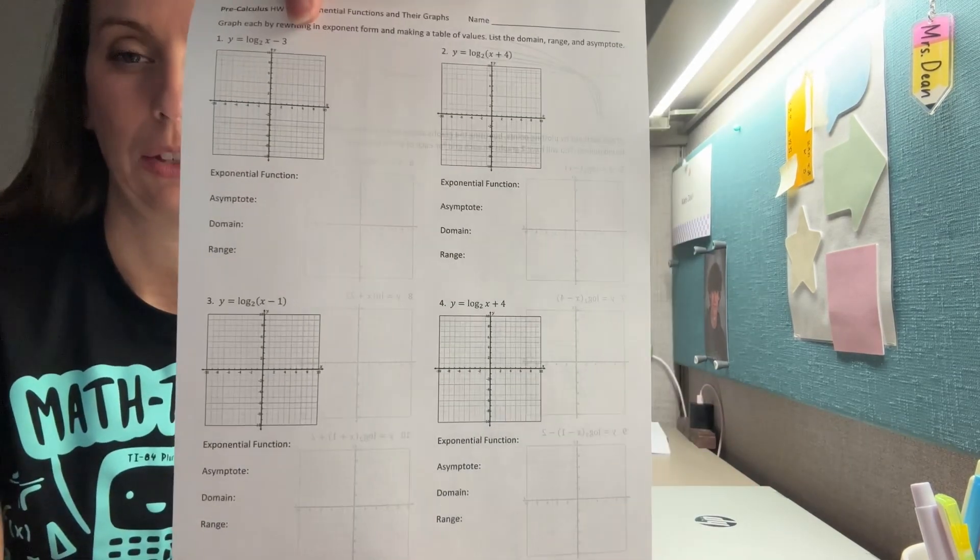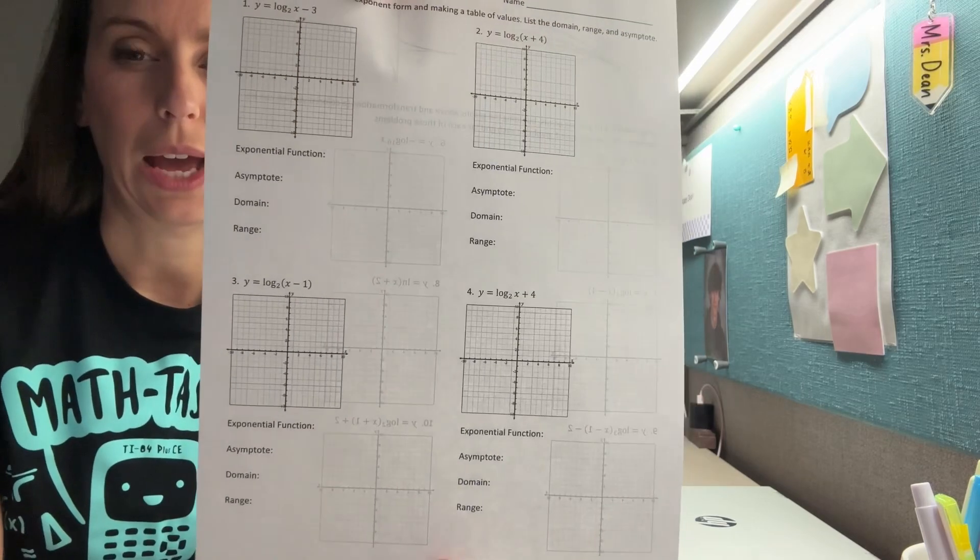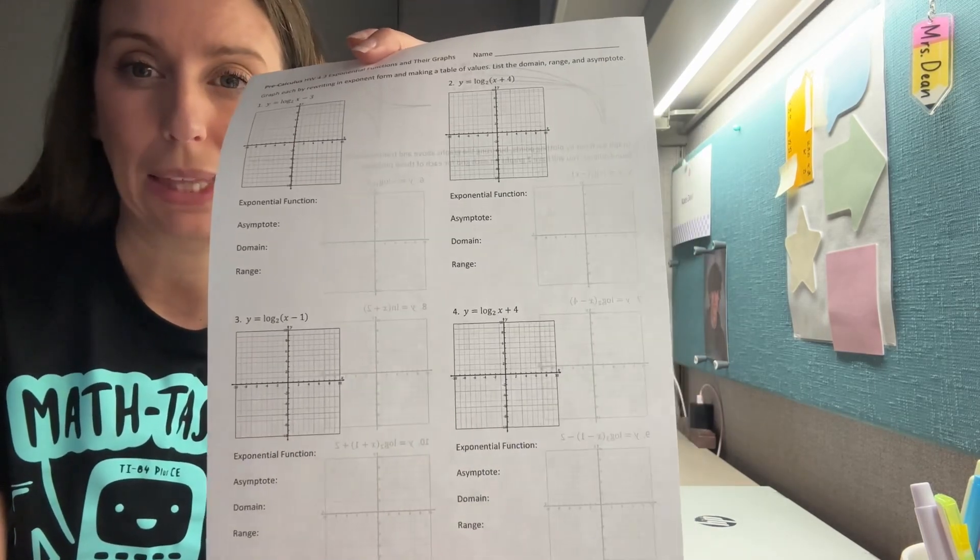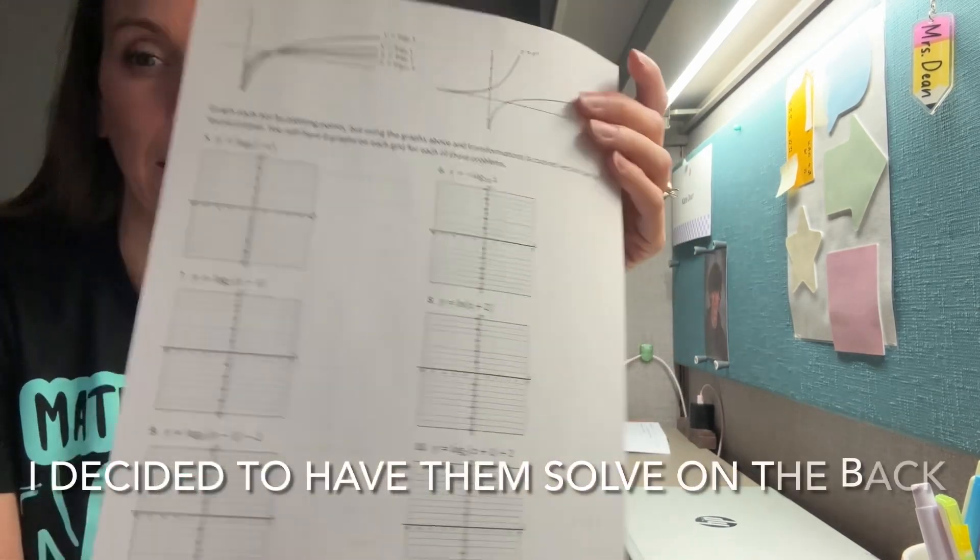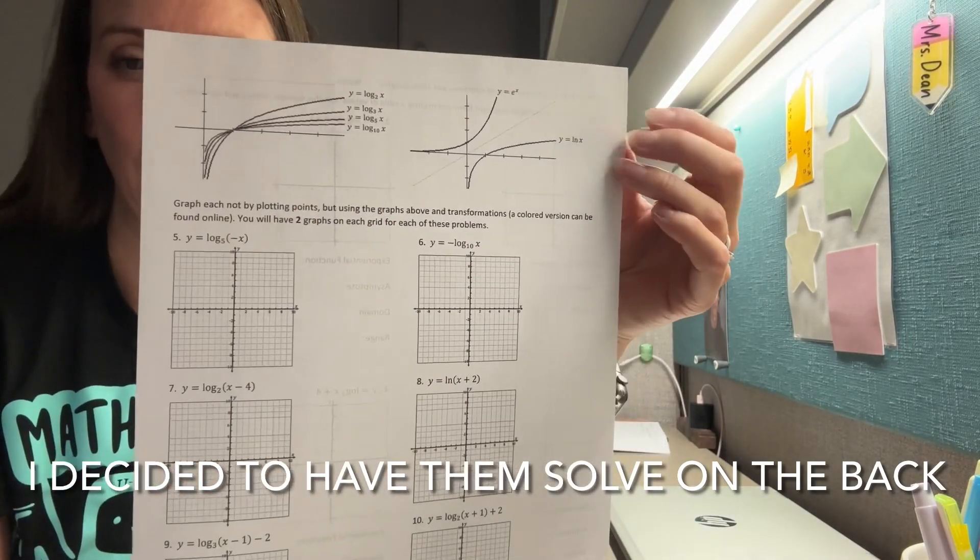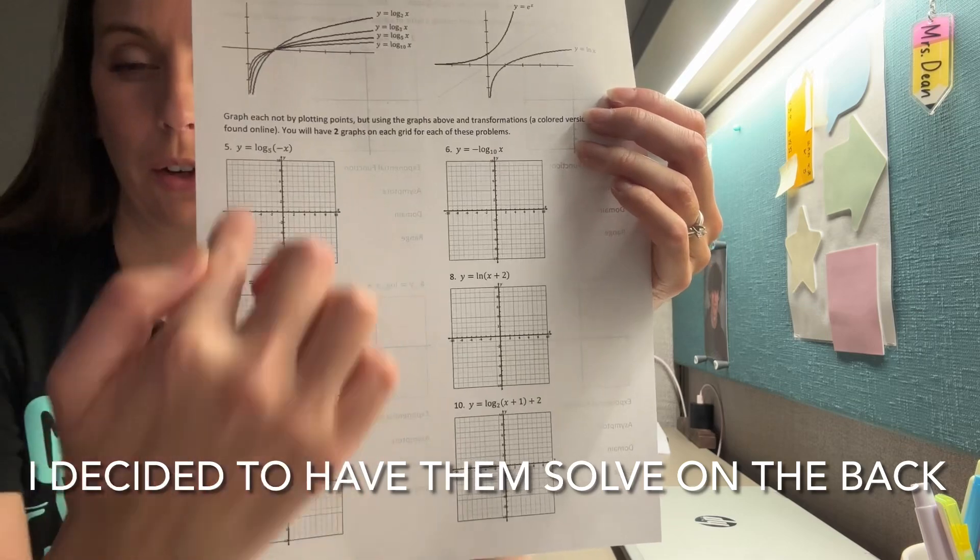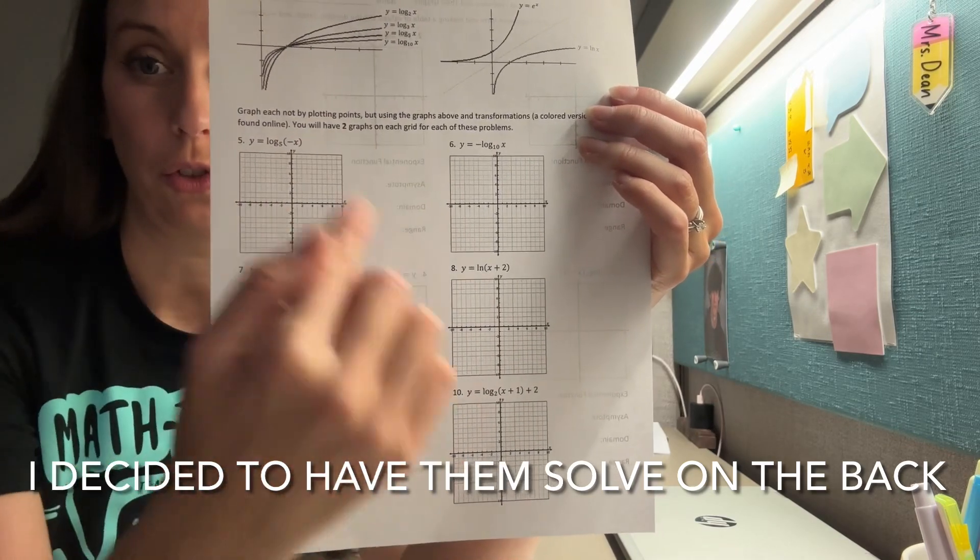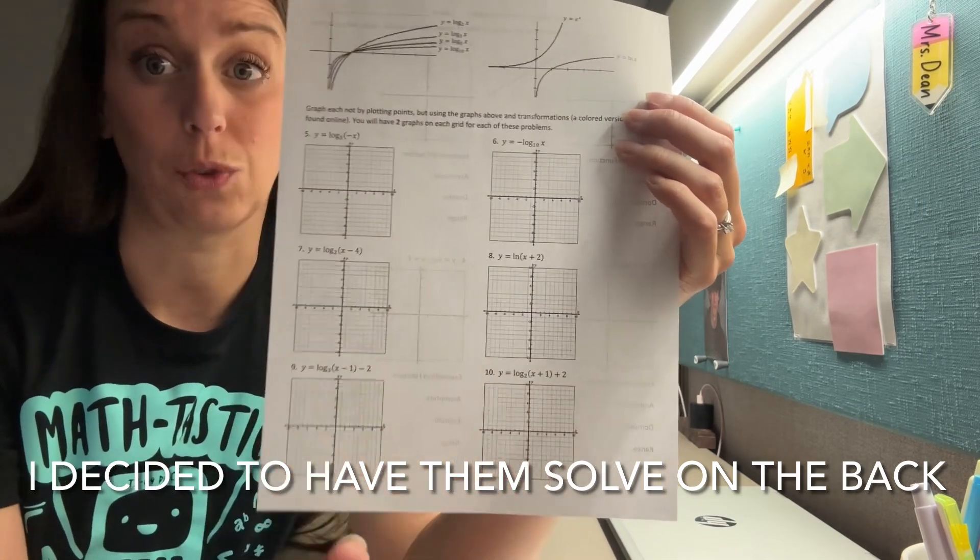And then their homework is just, they're going to have four graphs where they make the table and analyze those functions. And then on the back, they're going to do six where they're going to use the parent function. So I've given them those parent functions. So they're going to graph the parent function, and then they're just using the transformation. So on the back, there's no tables at all.